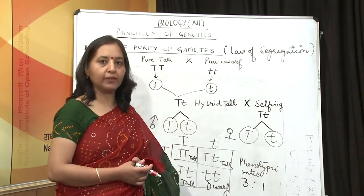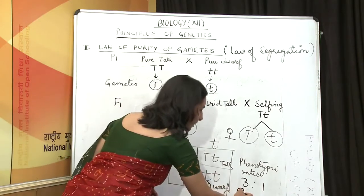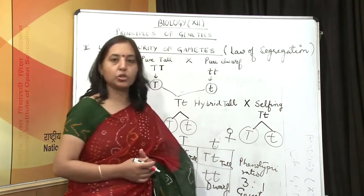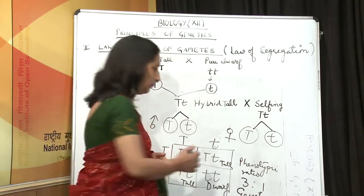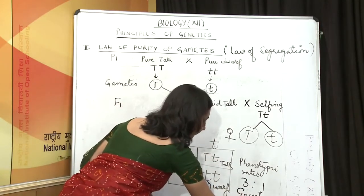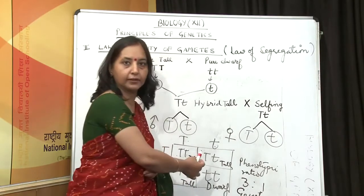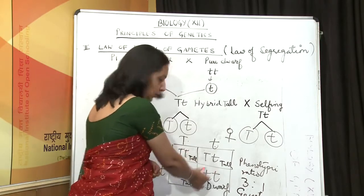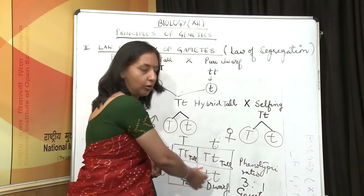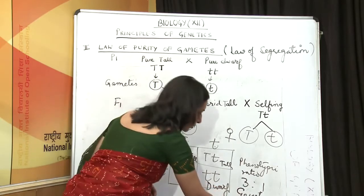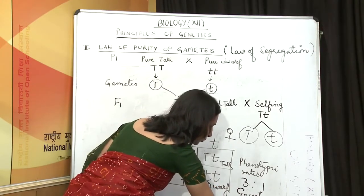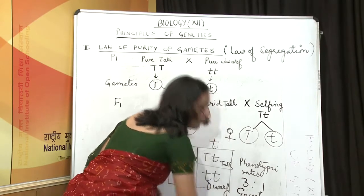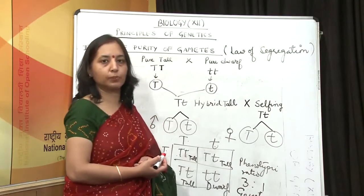If we check the genotypic ratio — the ratio based on genetic makeup — it is different. We have one pure tall plant (same allele duplicated), two hybrid tall plants, and one pure dwarf. So the genotypic ratio is 1:2:1 — pure tall, hybrid tall, and pure dwarf — with 50% of the plants being hybrid tall.